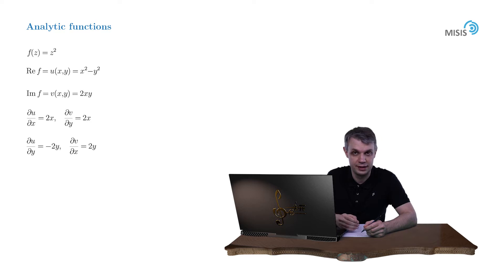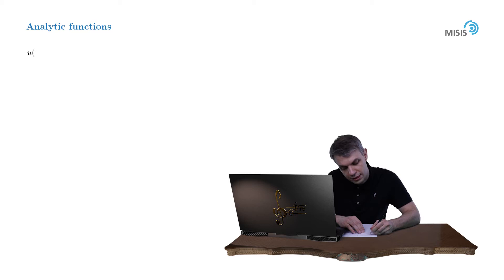So everything seems fine. Now let us consider somewhat maybe less trivial example. What if only the real part of the function is given to us? For example the function x cubed plus 6x squared y plus minus 3xy squared and minus 2y cubed.